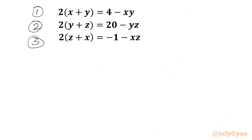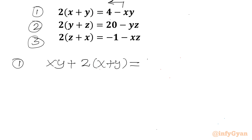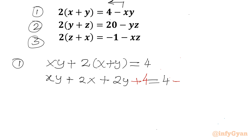Now I will write our first equation and I will take the minus xy term to the LHS. So I can write equation 1 as xy plus 2x plus 2y equal to 4. Now I will add 4 to both sides, so I write plus 4 on each side.